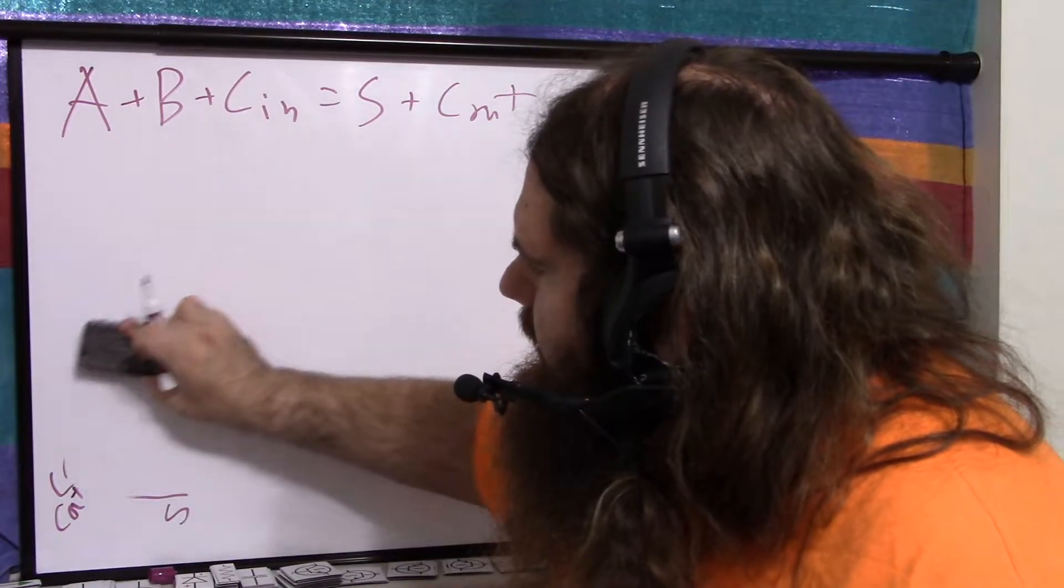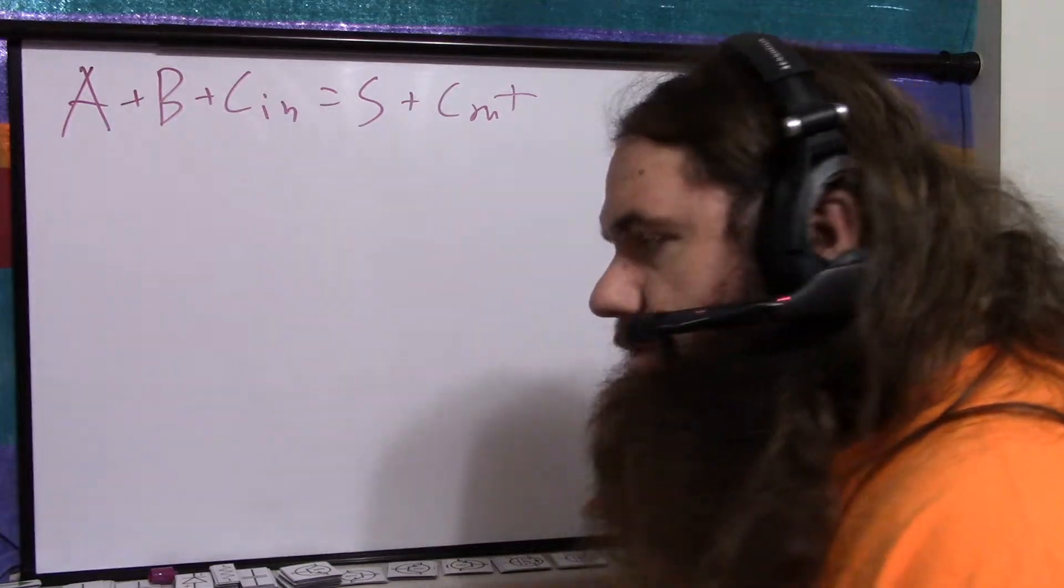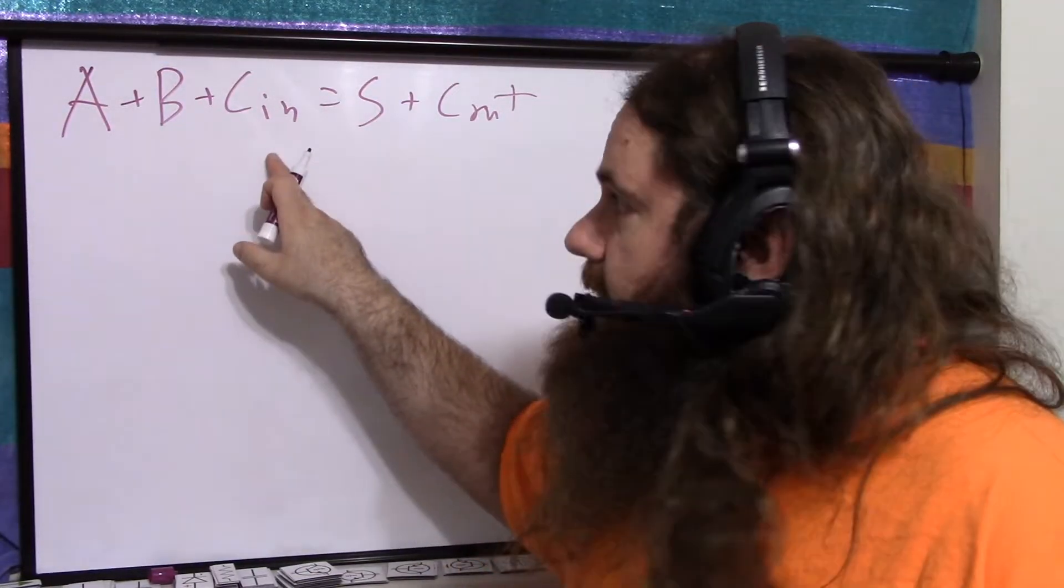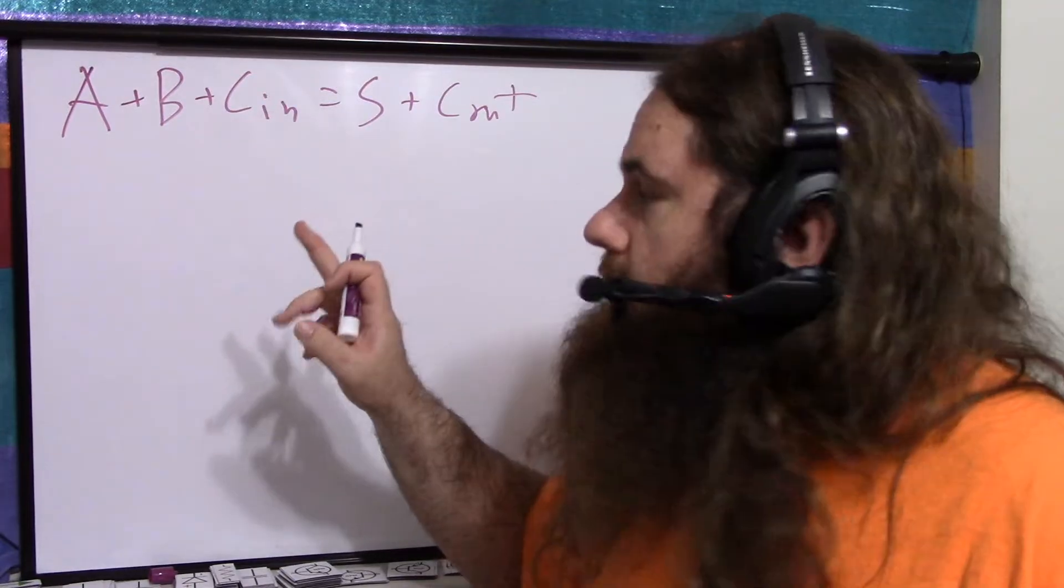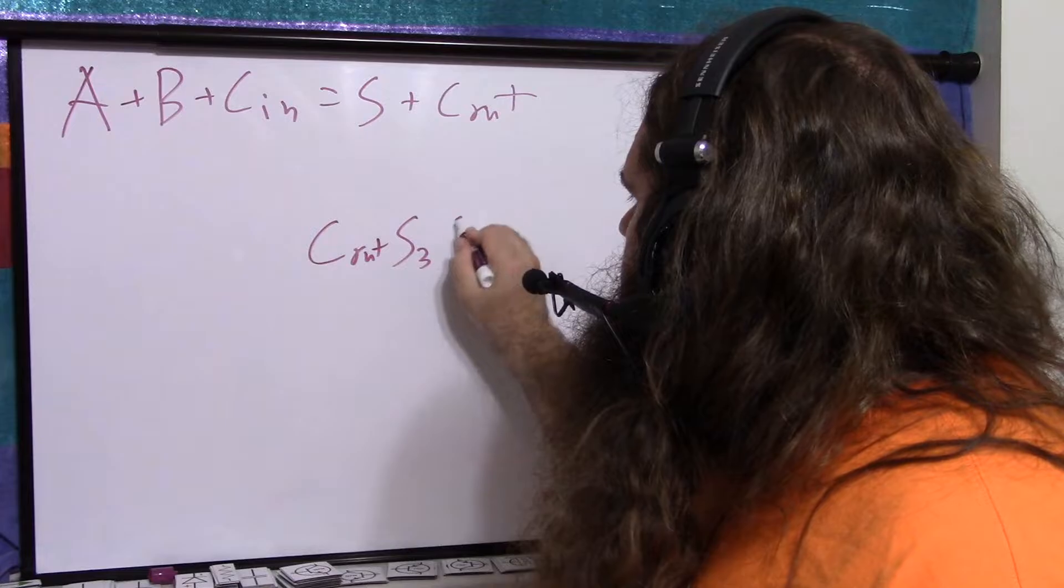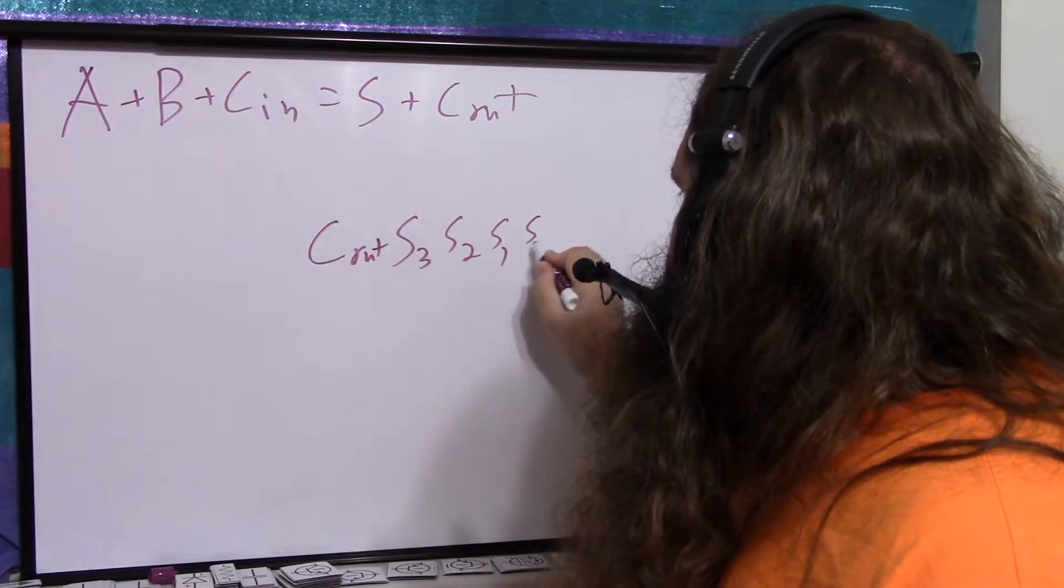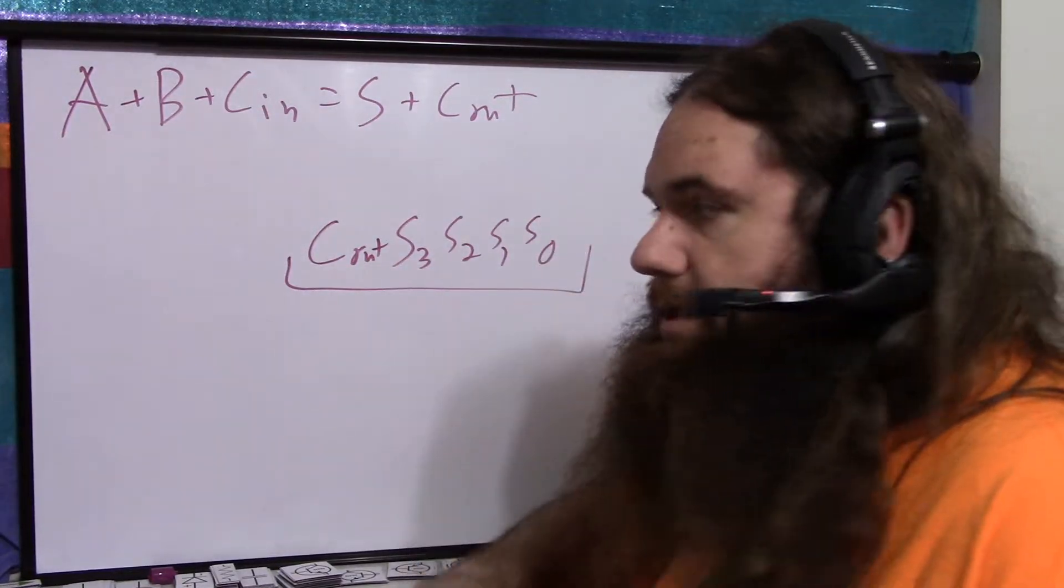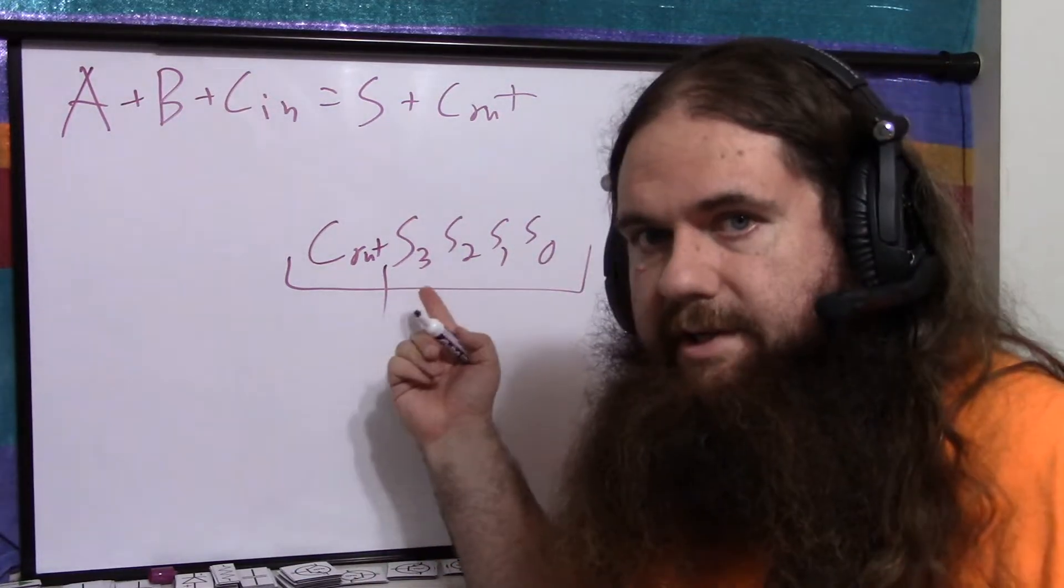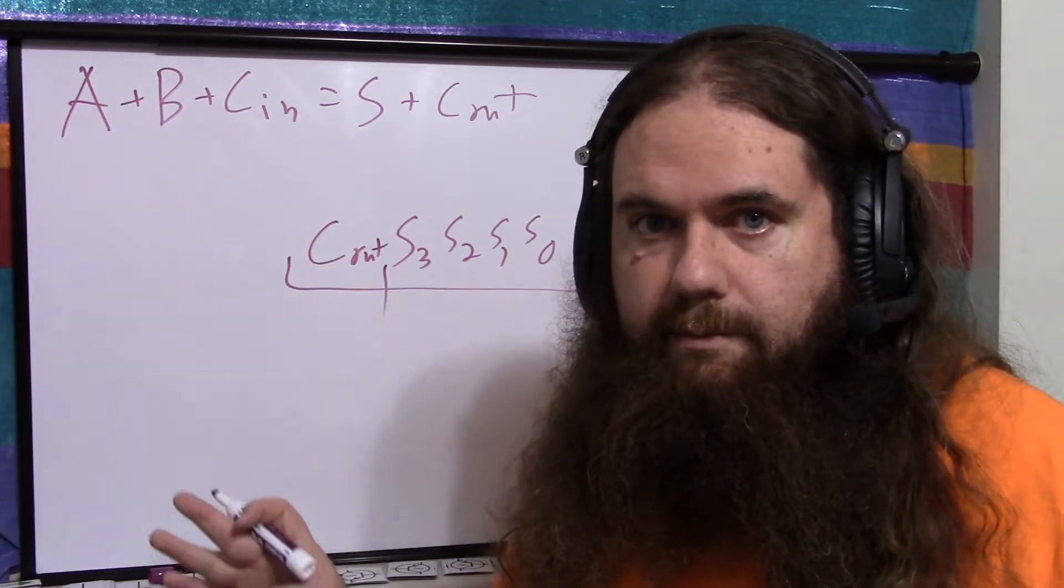So more generally, you think of carry out as just bit 5. So you have A is 4-bits-in, B is 4-bits-in, C-in is 1-bit-in. And it's really just C out, S3, S2, S1, S0 as a 5-bit number. You just think of it that way, it makes a lot more sense. So C out is just the fifth bit, the overflow bit.